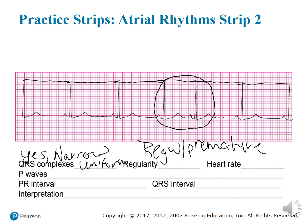Let's determine heart rate. Counting across gives us 26 small boxes. Since it's regular with a premature beat, we solve it the same way as a regular beat — we don't really count the premature beat because it's just a hiccup. So 1500 divided by 26 gives us a heart rate of 57 beats per minute.